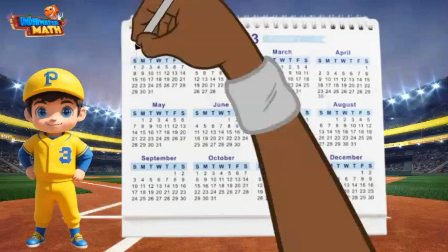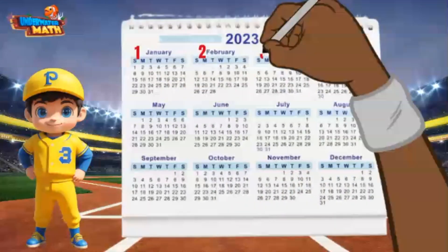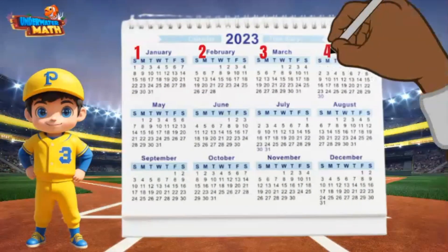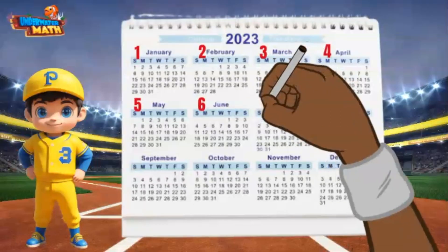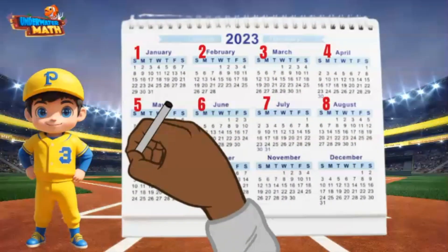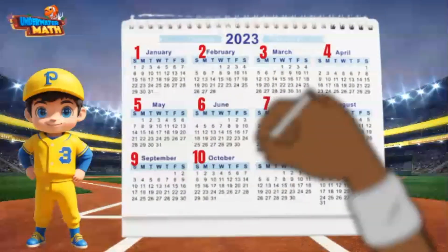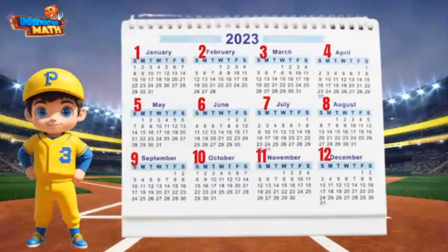Let's count the months together: 1, 2, 3, 4, 5, 6, 7, 8, 9, 10, 11, and 12. There are 12 months in a year.